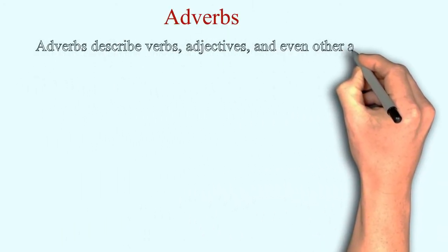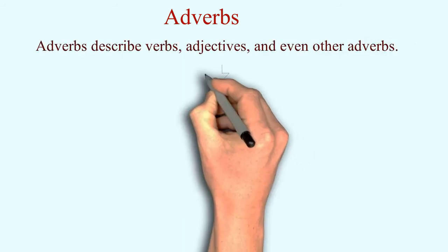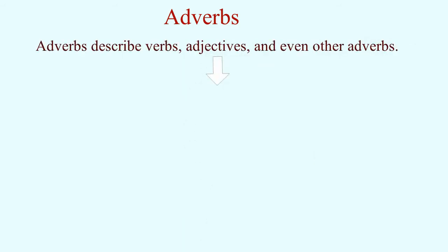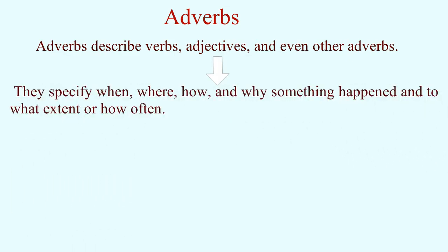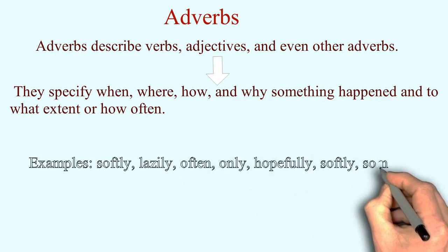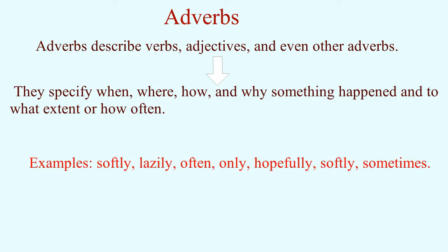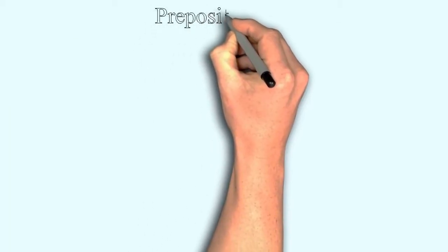Adverbs — we have heard since childhood that they describe verbs, but that is not entirely correct. Adverbs describe verbs, adjectives, and even other adverbs. They specify when, where, how, why things happened, and to what extent things happened. For example, in 'very lazy boy,' 'lazy' is the adjective and 'very' is the adverb.